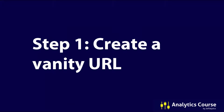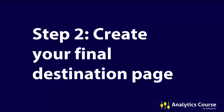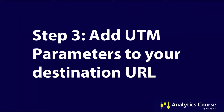Step one: create your vanity URL. For example, here we have jefflytics.com/youtubers — this is a vanity URL I'm creating just for people watching this video on YouTube. Step two: create your final destination page. In this case we're going to jefflytics.com/90-day-challenge, which is where people sign up for our 90 Day Challenge. This is our final destination URL — wherever we send people, this is the page they land on.